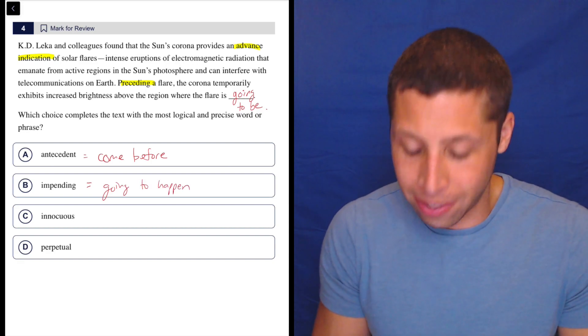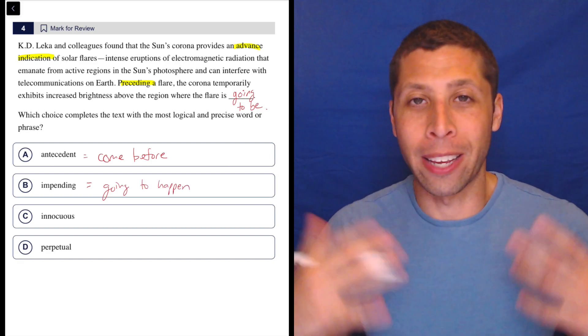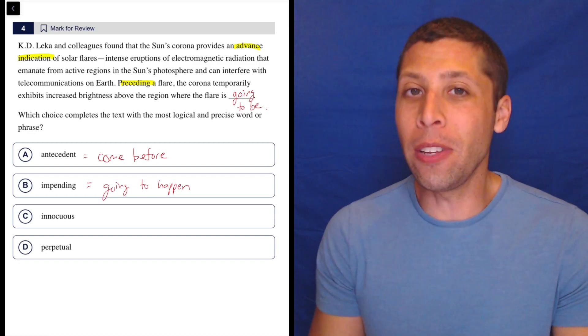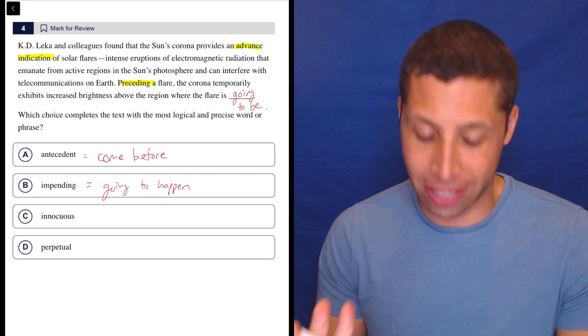So you might've heard like a phrase like impending doom, right? Like something bad is about to happen. It's impending. It's going to happen. So both of these words though are very close. So let's hold them off for a second.